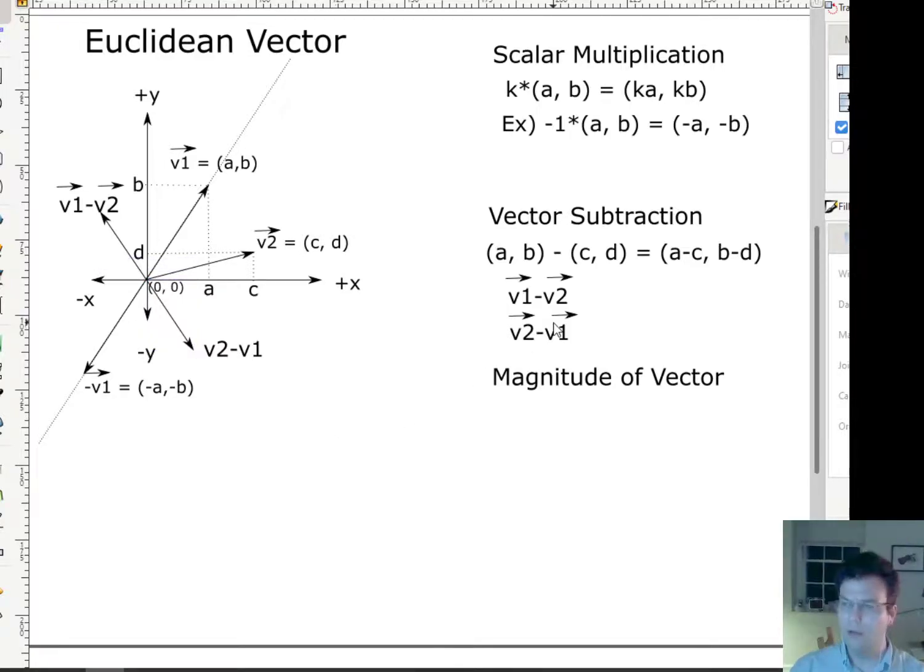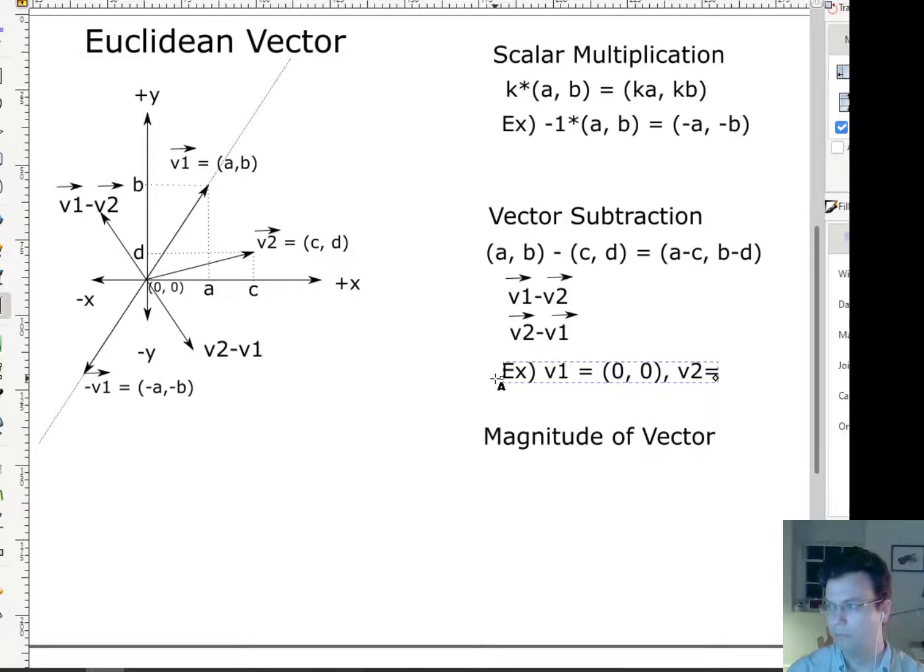And if you can't remember which one is which, you can just look at a simple example. So let's say that I had v1 equal to (0,0). And v2 was equal to (e,f). And I want a vector from v1 to v2. Well, if I do v1 - v2, that's going to give me (-e, -f). So that's not right.